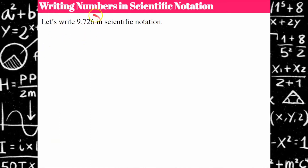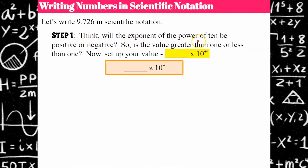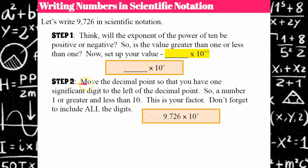Let me model one for you. Let's write 9,726 in scientific notation. First, will our exponent be positive or negative? Since this is a large number, much greater than one, we know our exponent is going to be positive. I've got my base 10 ready and my multiplication sign. Step two: move the decimal point. The decimal point is currently to the right of the six. I need to move it so I only have one digit to the left — between the nine and the seven. So there's my factor: 9.726.